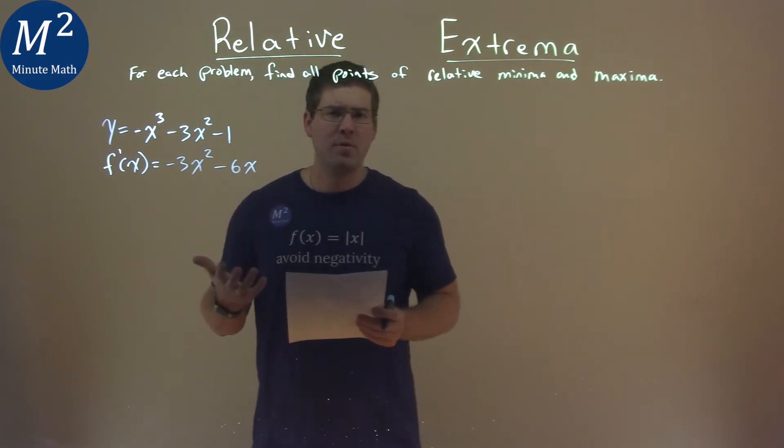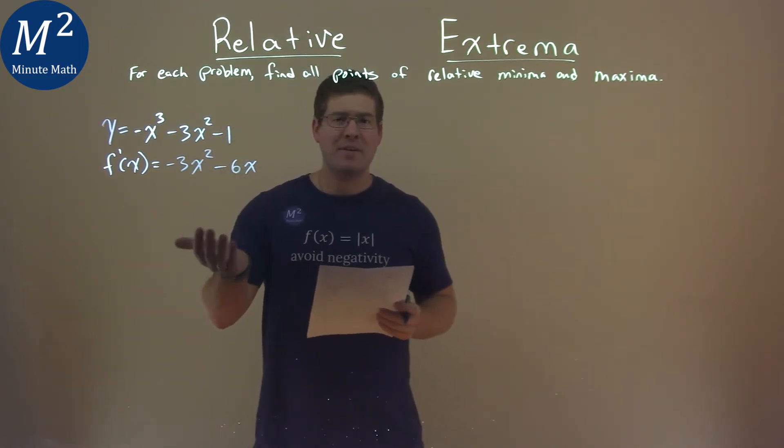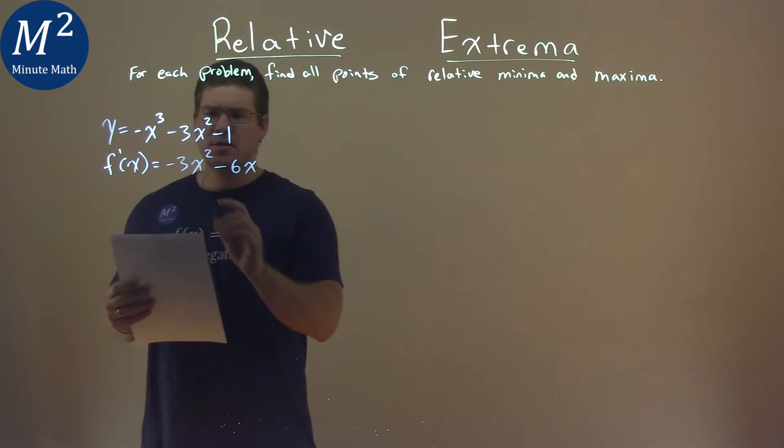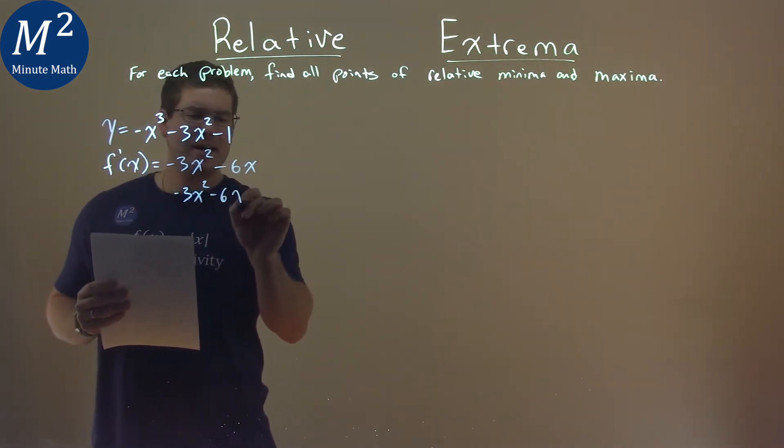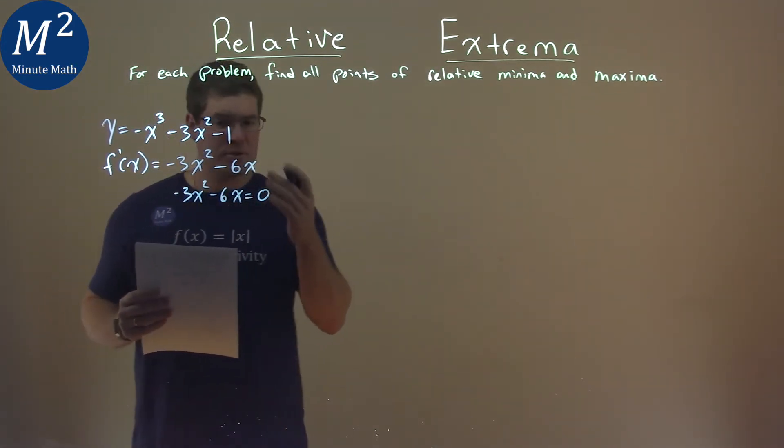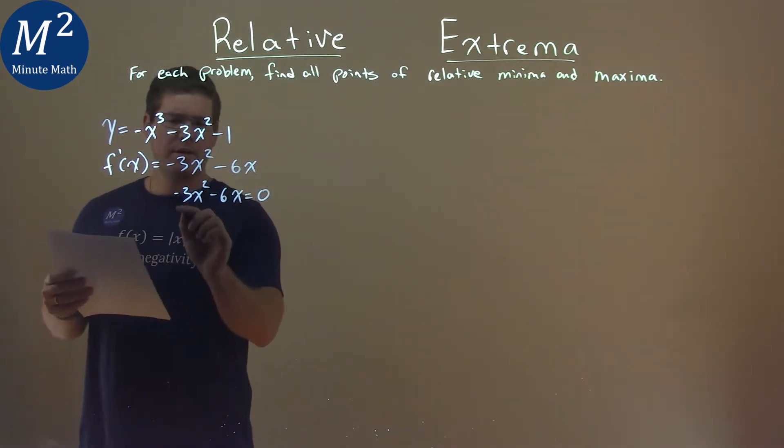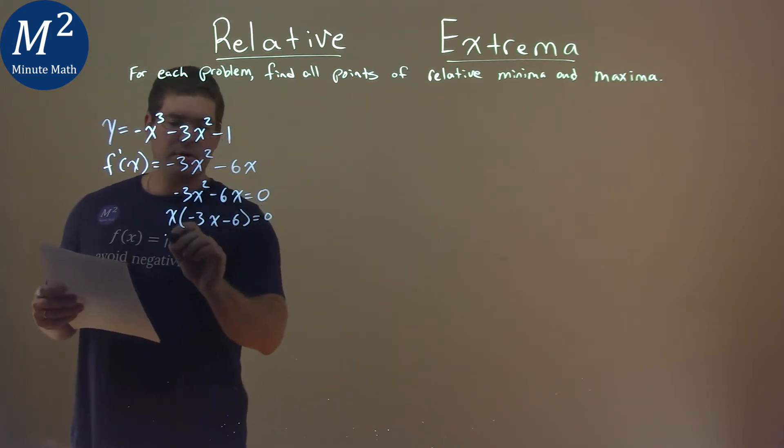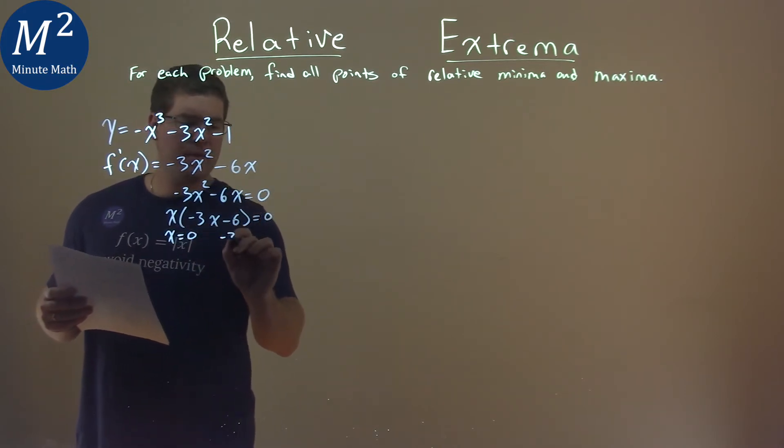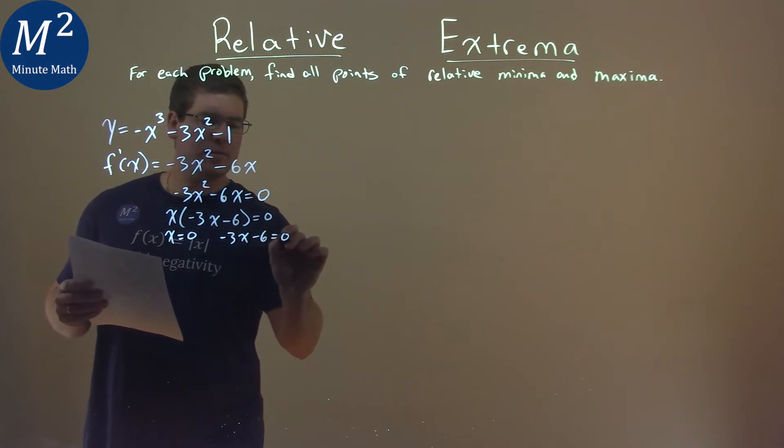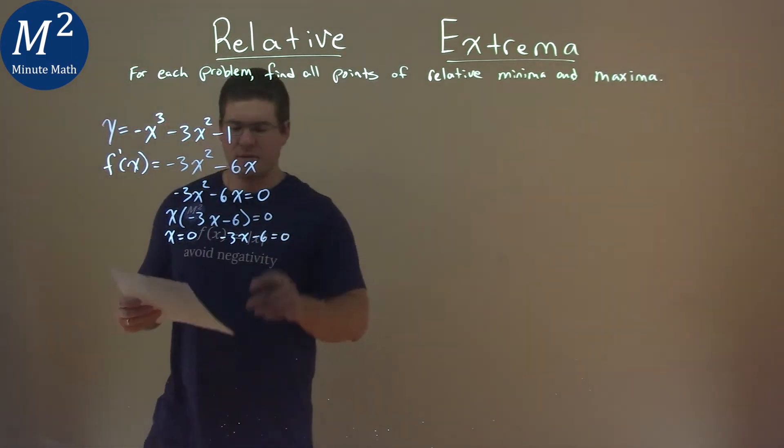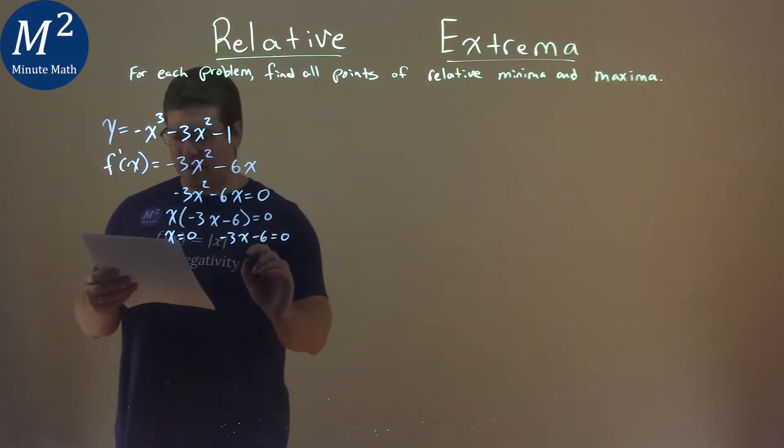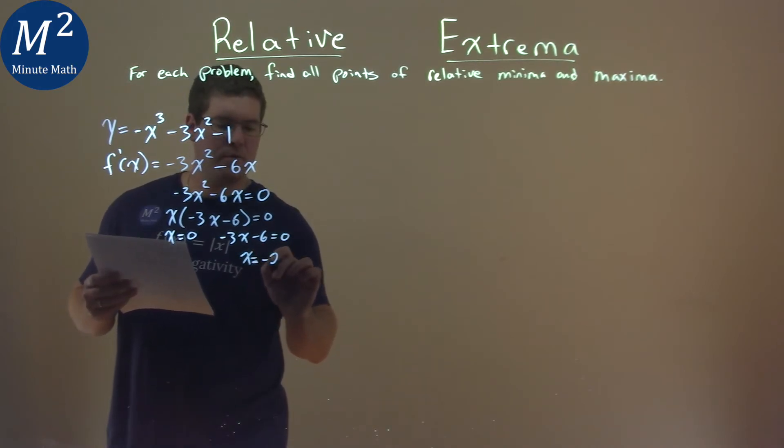To do our first derivative test, we need to take our derivative and set it equal to 0. So negative 3x squared minus 6x equals 0, and we're solving for x. Pull out an x here, have negative 3x minus 6 here, equals 0. Both parts equal to 0: x equals 0. For negative 3x minus 6 equals 0, add 6 to both sides, divide by negative 3, and x comes out to be negative 2.